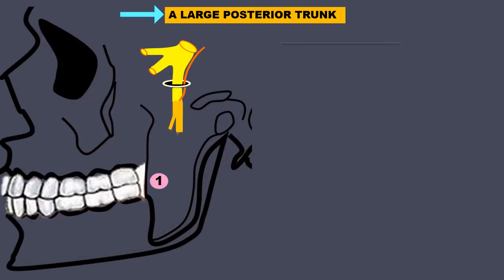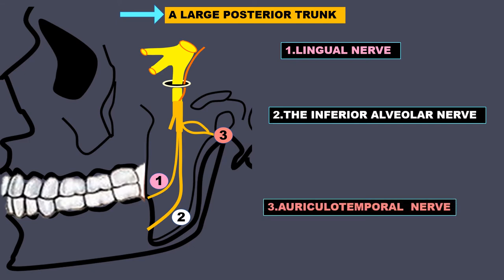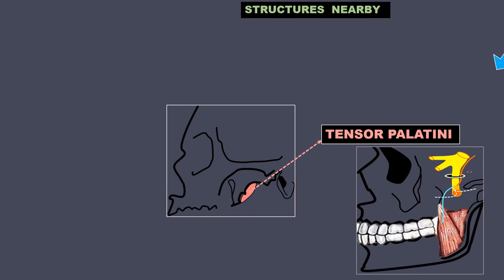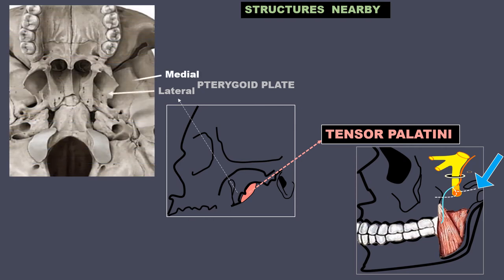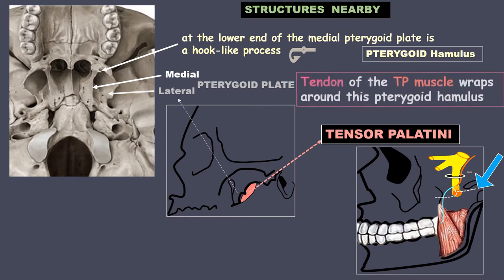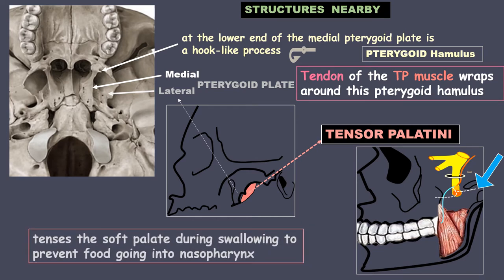The large posterior trunk gives rise to: one, the lingual nerve; two, the inferior alveolar nerve; and three, the auriculotemporal nerve. The lingual nerve and inferior alveolar nerve are important because they are blocked during minor oral surgical procedures like extraction, RCT, etc. The tensor palatini, which we just read about, receives its nerve supply from the branch passing through the otic ganglion. At the lower end of the medial pterygoid plate is a hook-like process called the pterygoid hamulus. The tendon of the tensor palatini wraps around the pterygoid hamulus and tenses the soft palate during swallowing to prevent food from going into the nasopharynx.